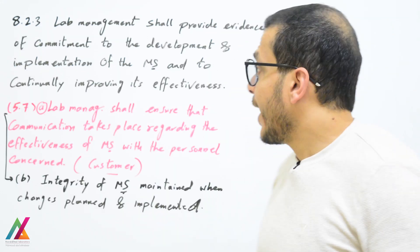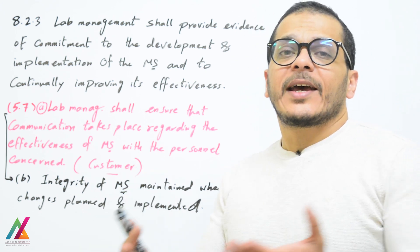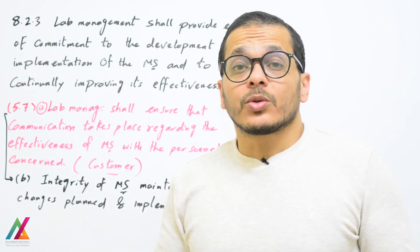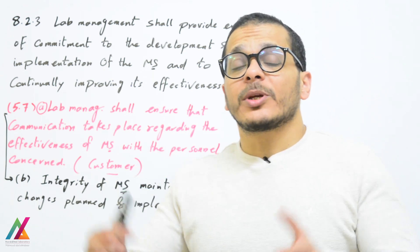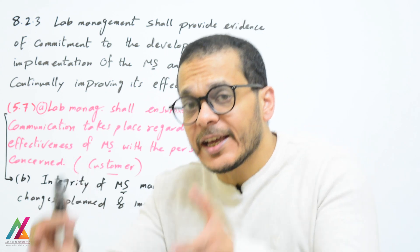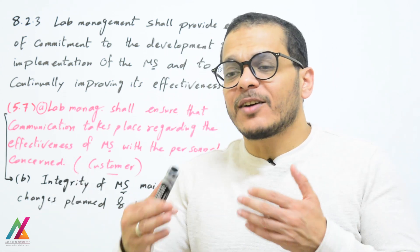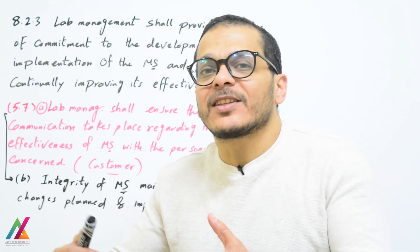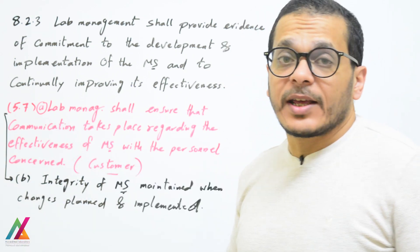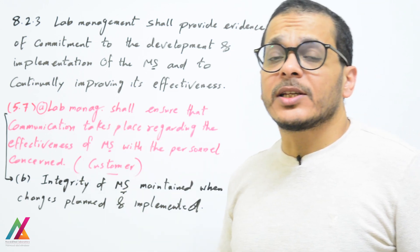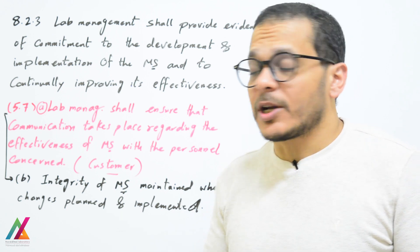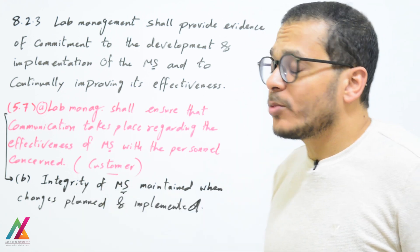Lab management shall provide evidence of commitment to the development and implementation of the management system and to continually improving its effectiveness. They shall apply all requirements of this document, maintain work in accordance with the management system, and pursue improvement. Management shall also ensure communication takes place regarding the effectiveness of the management system with relevant personnel and customers, and that the integrity of the management system is maintained when changes are planned and implemented.